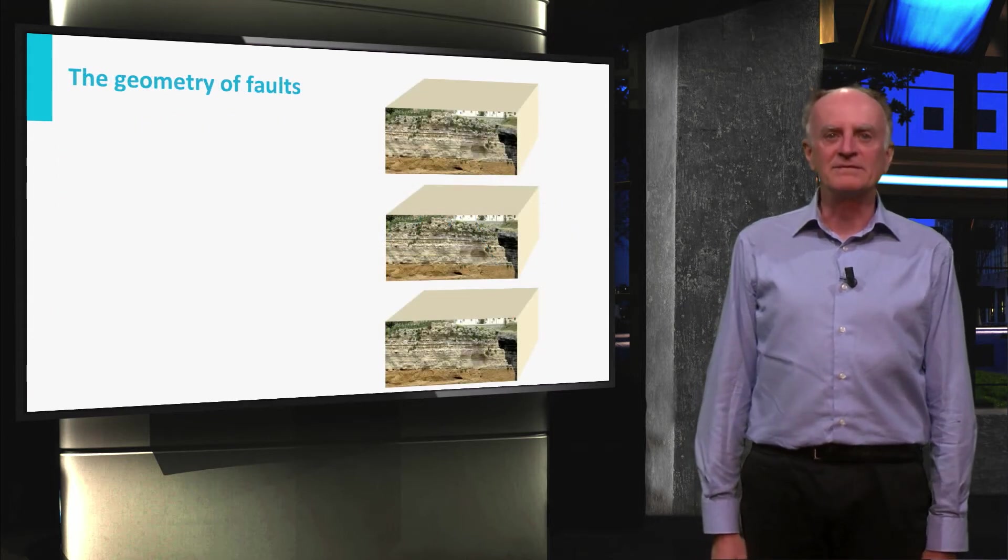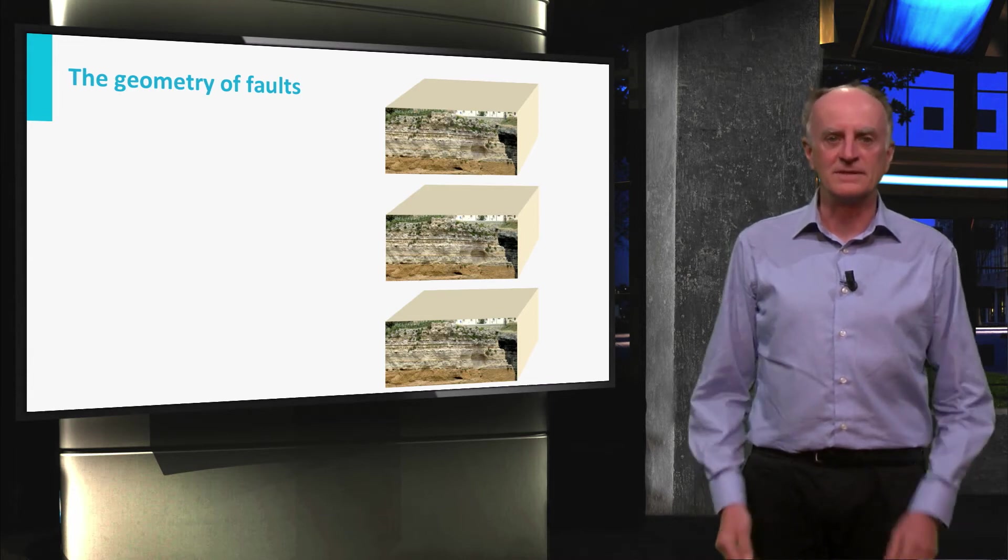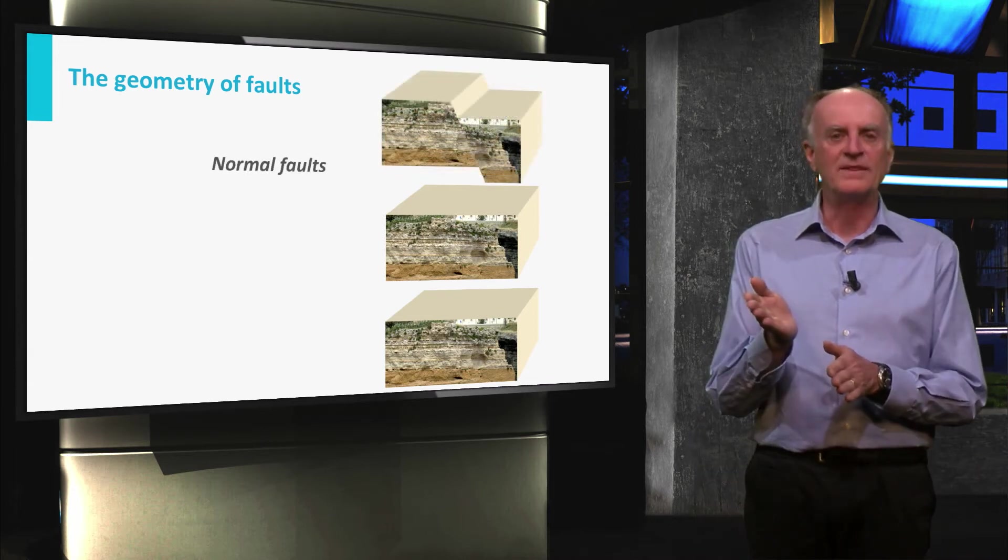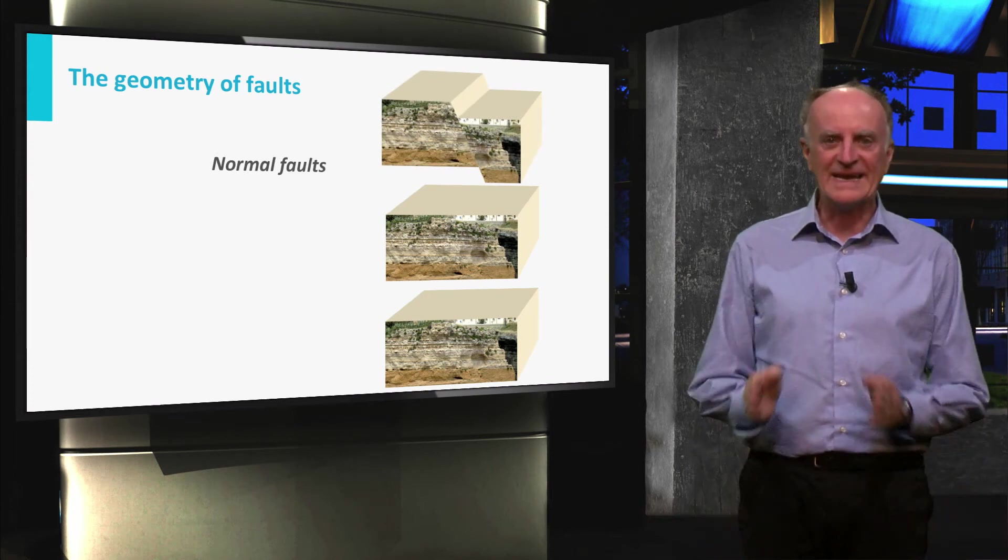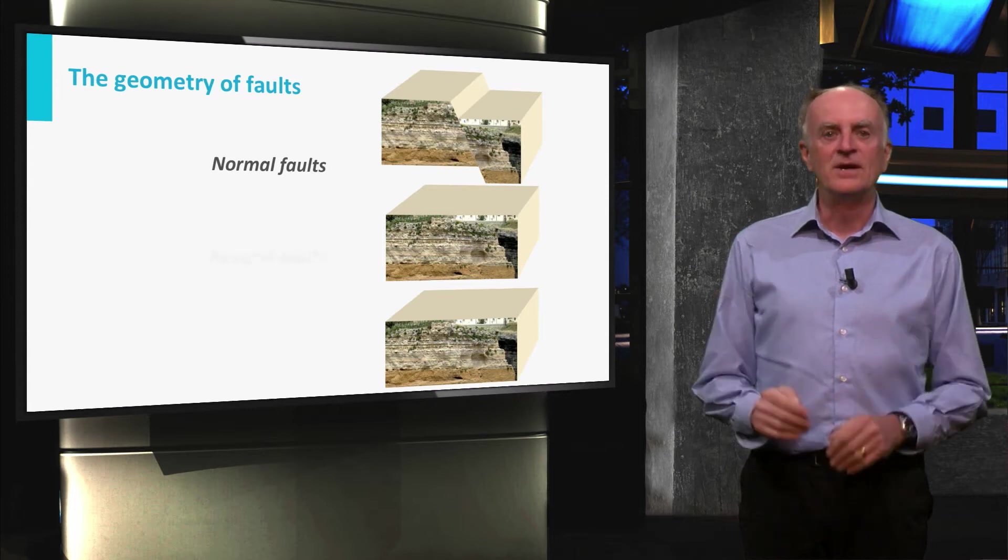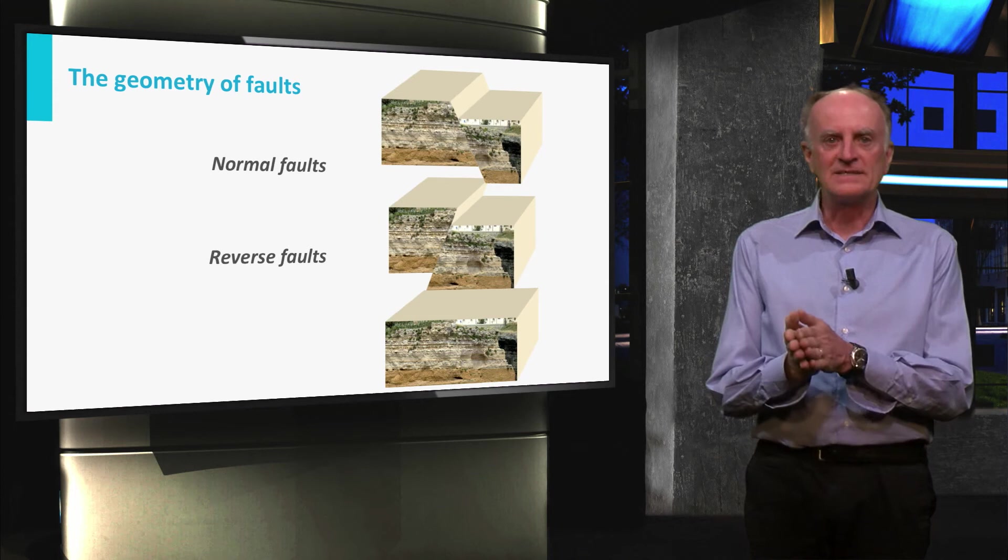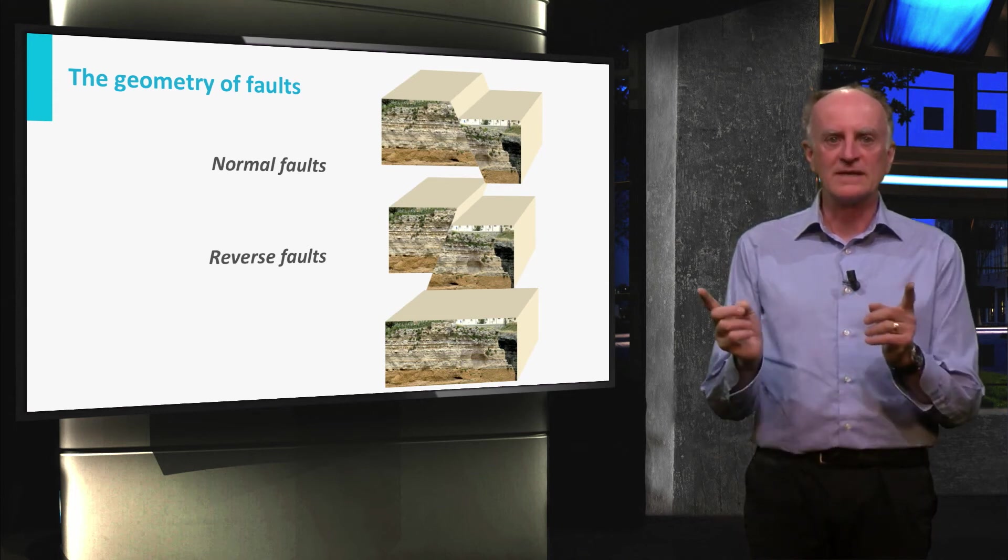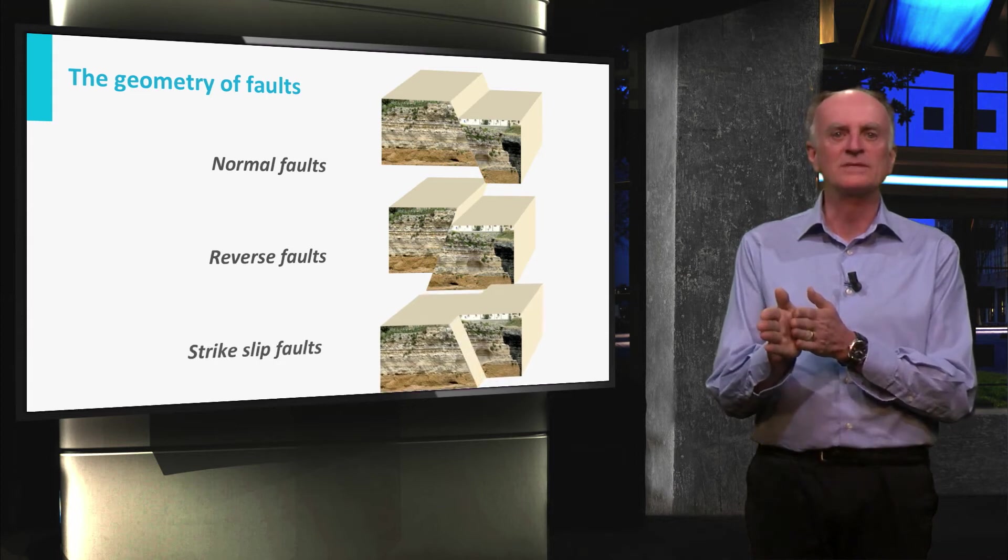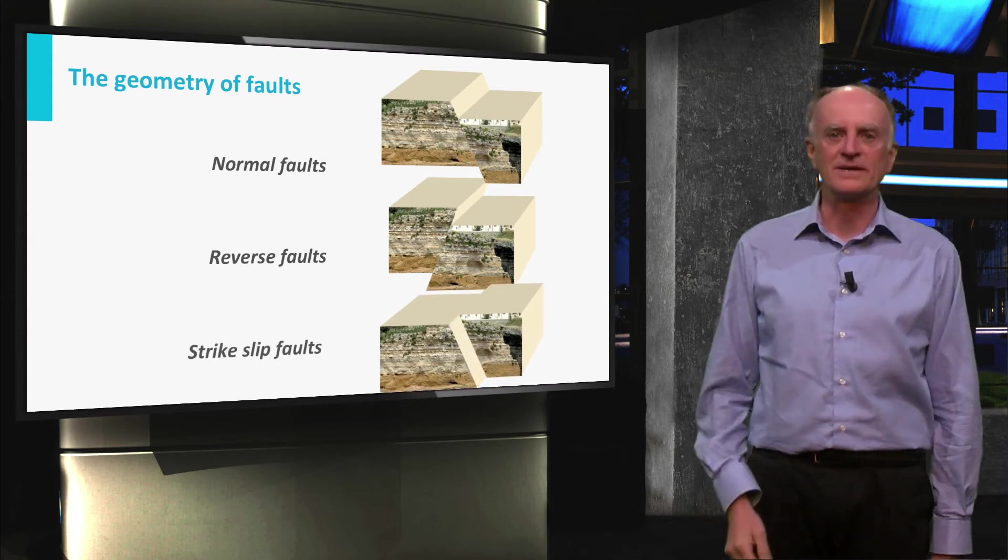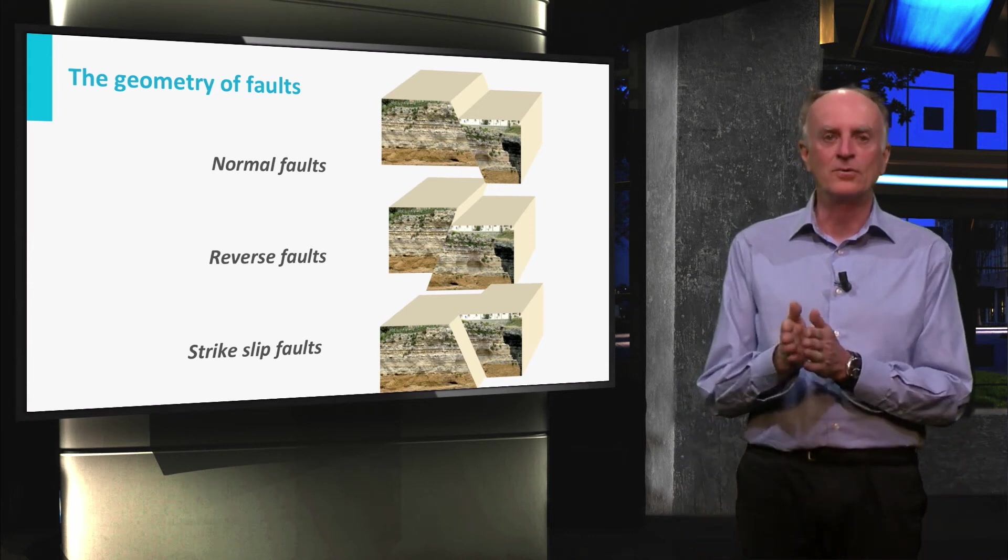Depending on the relative sense of movement of one block with respect to the other, we can distinguish three types of faults. Normal faults when the upper block slides down with respect to the lower block causing an increase in horizontal length. Reverse faults or thrusts when the upper block slides upward with respect to the lower block causing horizontal shortening. Strike-slip when the two blocks move laterally with respect to each other. Strike-slip faults are often subvertical and can be sinistral or dextral.